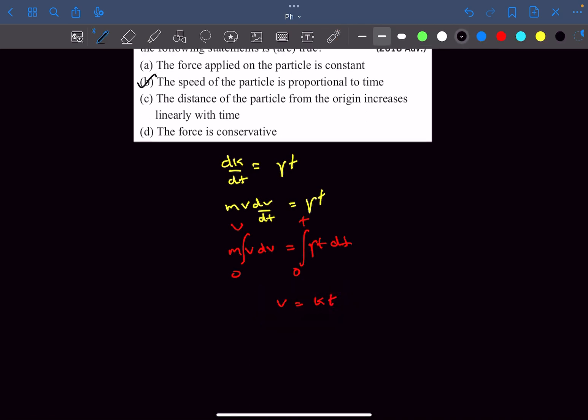Now they are asking about the force in option A. m dv/dt is going to be the force F acting on the body. So I can say F equals γt divided by the velocity which is kt and this comes out to be another constant. So option A is also correct.